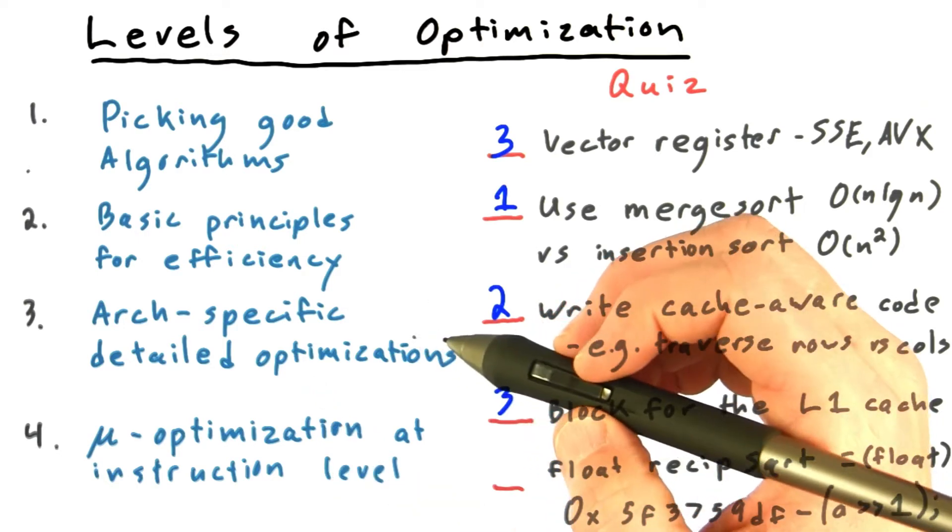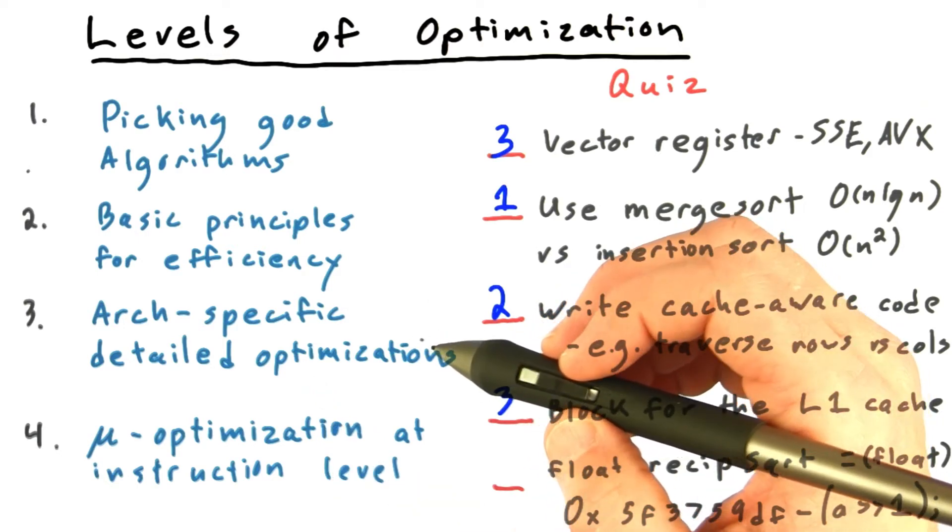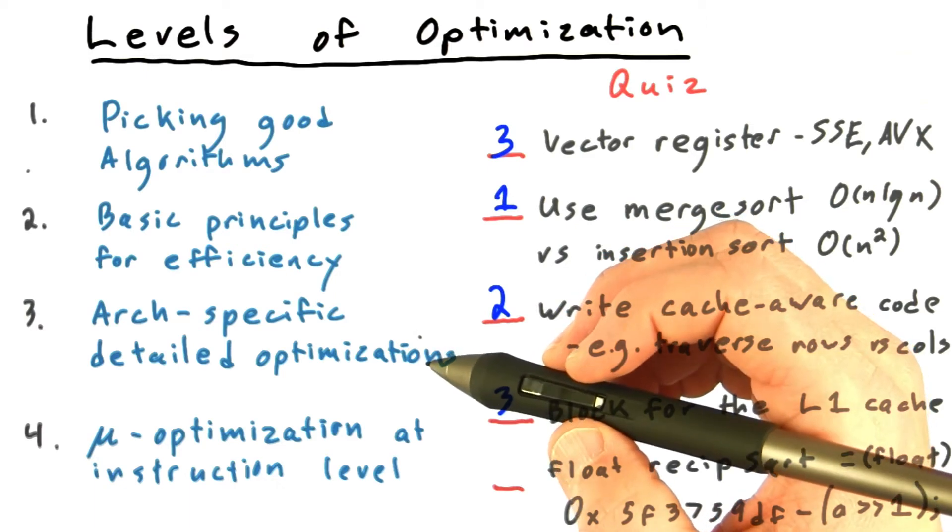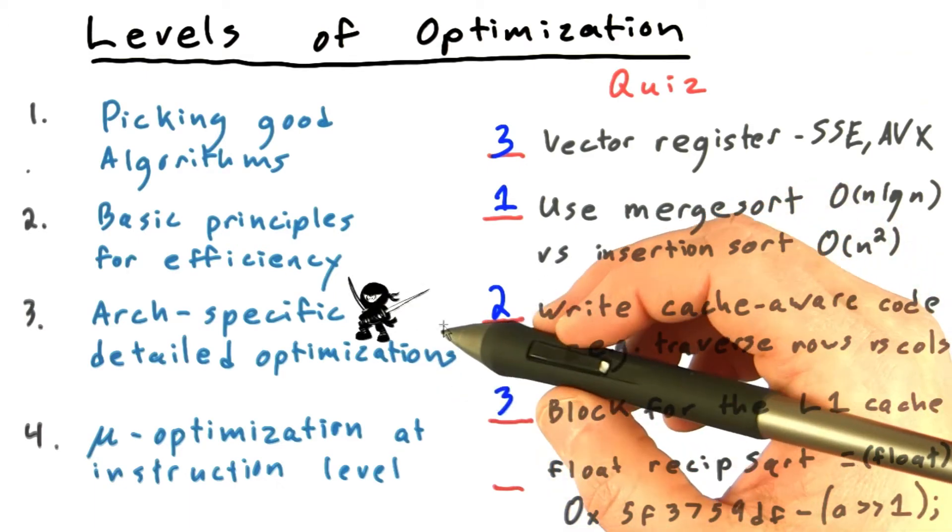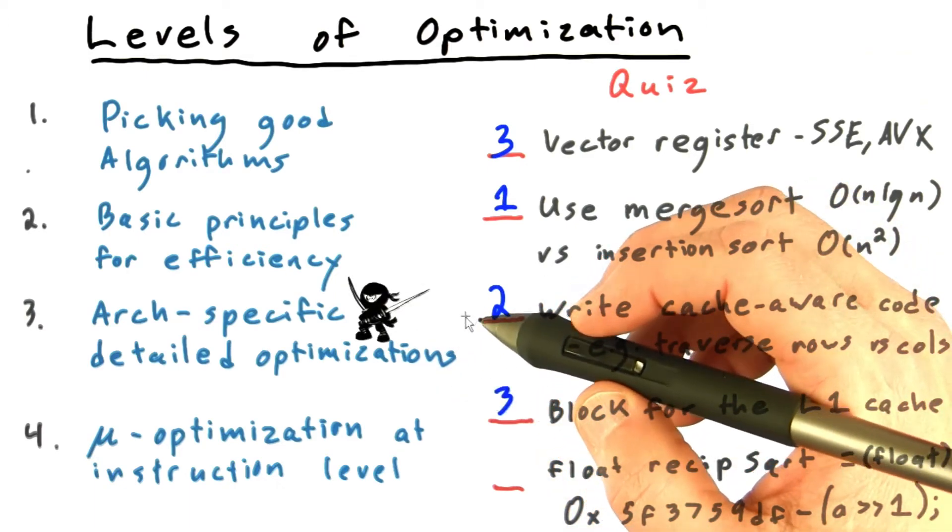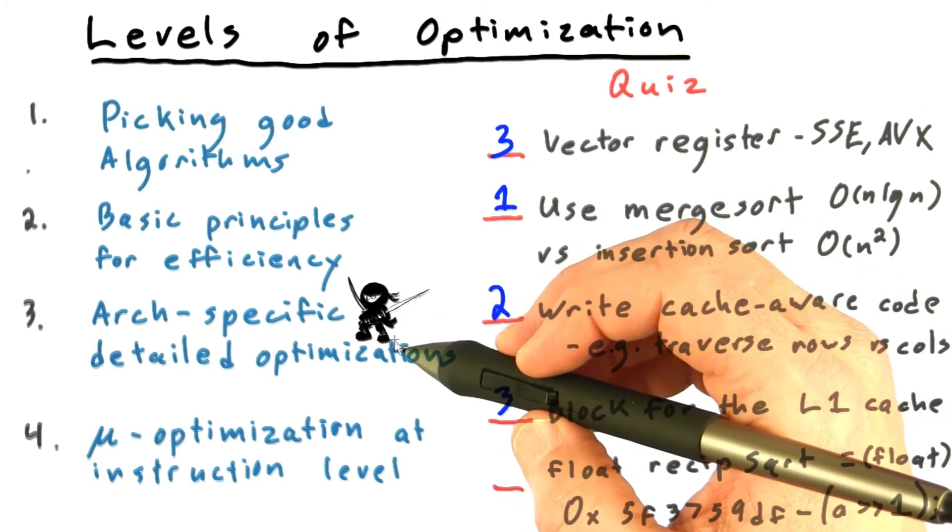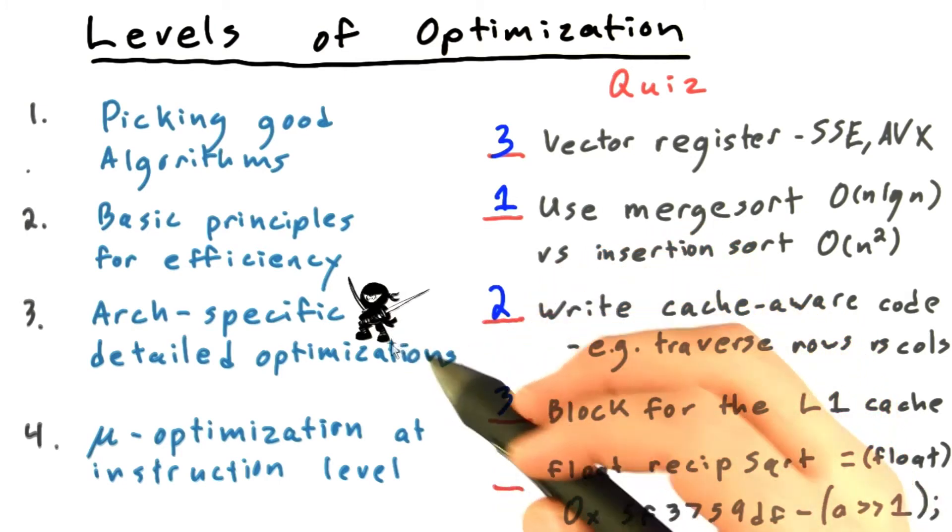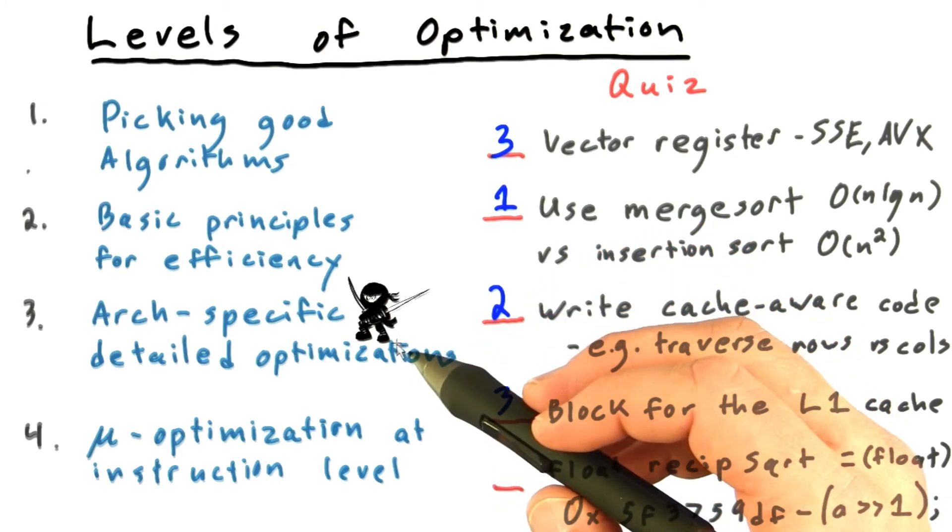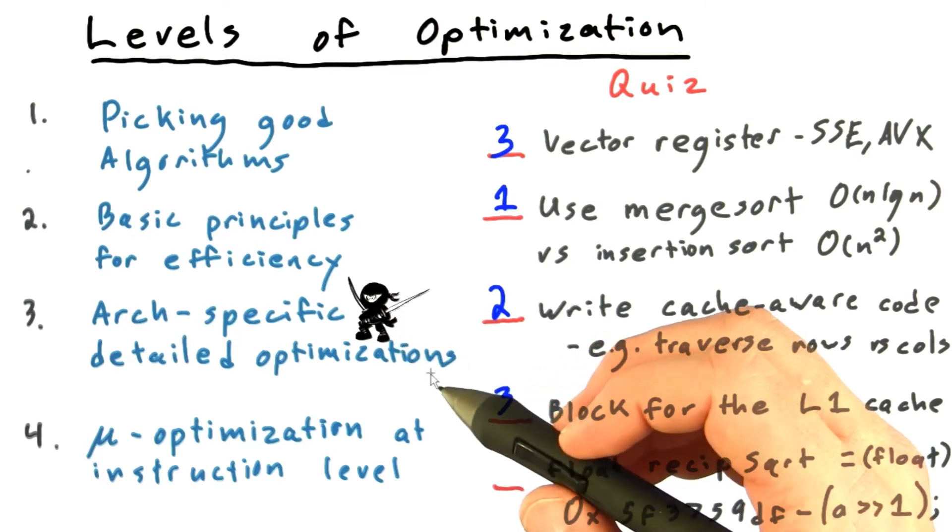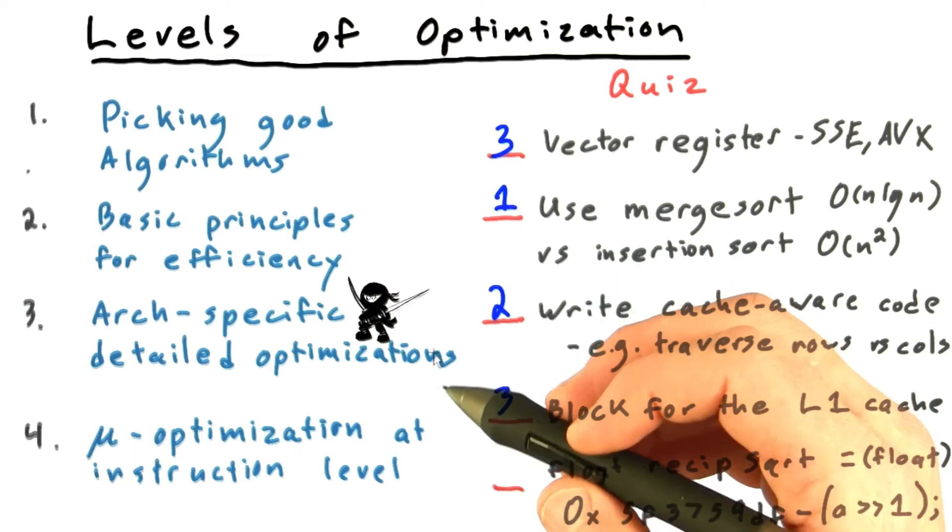These kind of architecture-specific optimizations tend to be the domain of what I call ninja programmers. We'll also touch on a few ninja-style GPU topics like shared memory bank conflicts. I'll try to highlight these ninja topics with this little icon here. The idea is that these are not needed or necessarily accessible to every programmer. They tend to be when you're squabbling over the last few percent of optimizations.